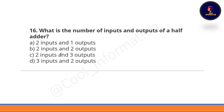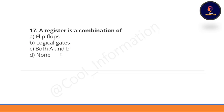Question 16: What is the number of inputs and outputs of a half adder? Option A: two inputs and one output, option B: two inputs and two outputs, option C: two inputs and three outputs, option D: three inputs and two outputs. The correct option is B, which is two inputs and two outputs.